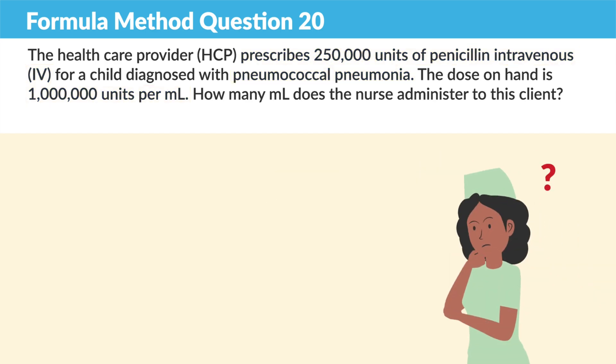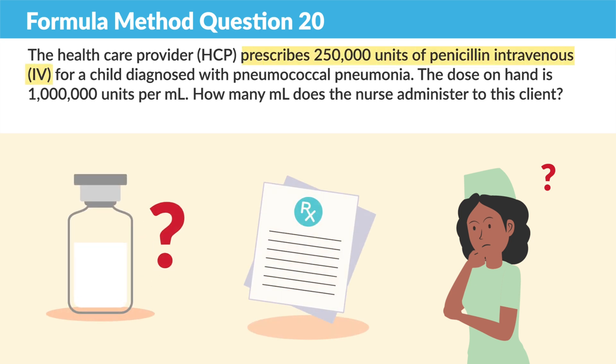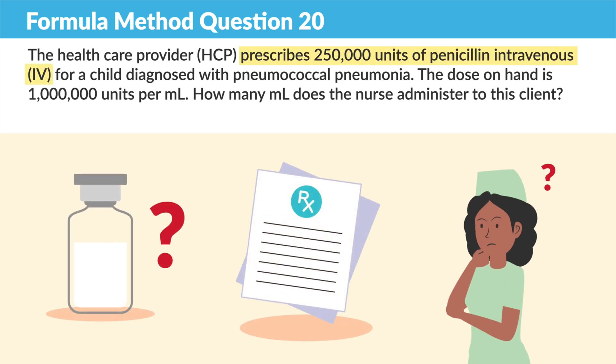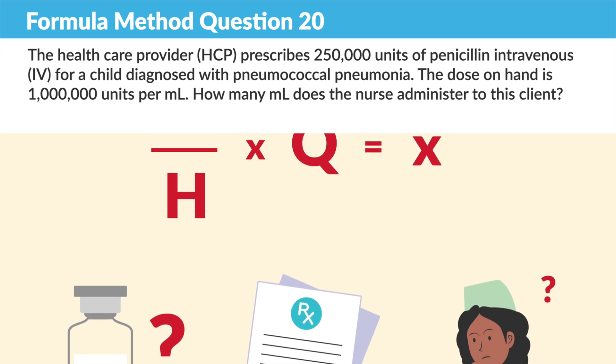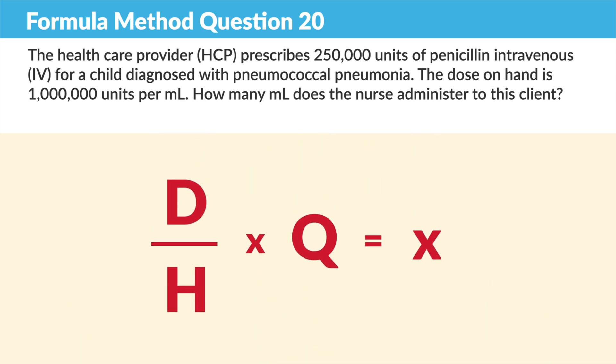First we are breaking it down and identifying what we're solving for. We're solving for ml's per dose, and we're using the desired over have formula method.